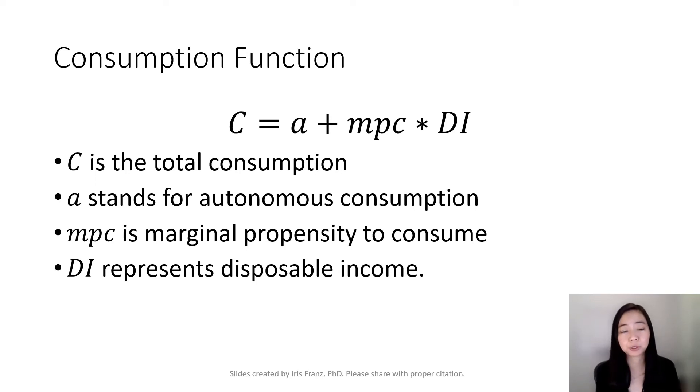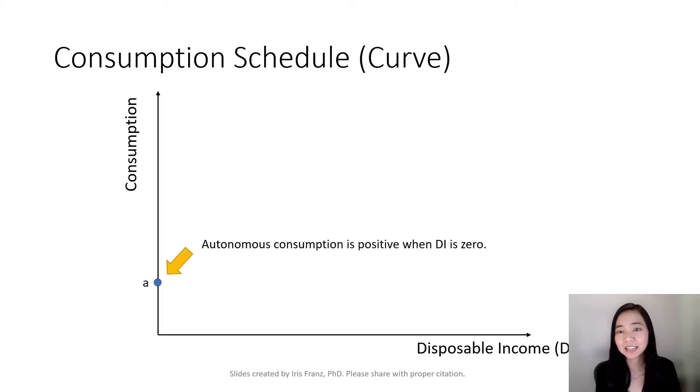We are able to sketch our consumption function or consumption schedule. Here is our consumption schedule. When our disposable income is zero, I still need to eat and drink in order to stay alive. So we call that autonomous consumption. When your disposable income is zero, you still need to eat and drink, and we call that autonomous consumption.